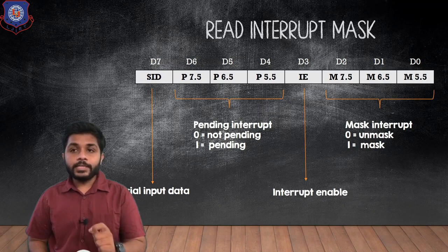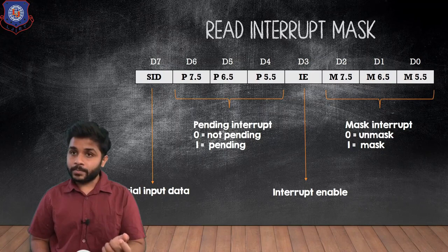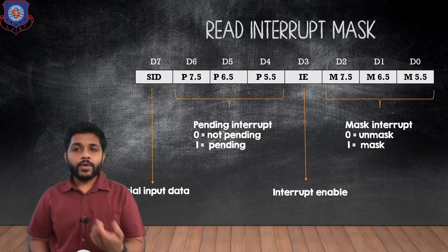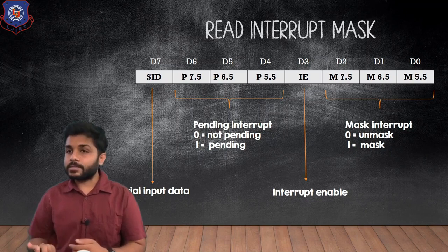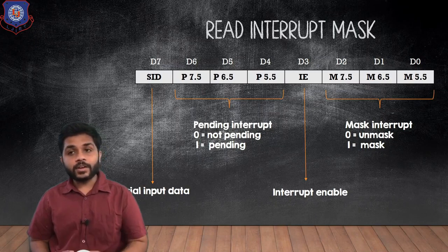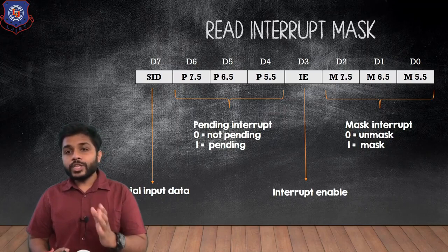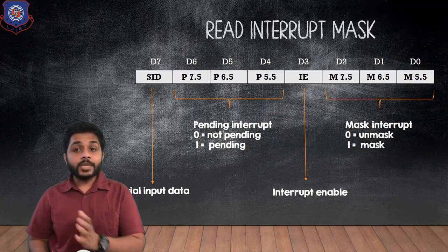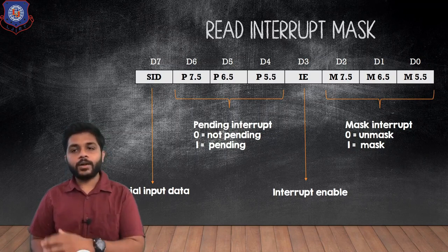Then D0, D1, and D2 — the values in these bits represent whether an interrupt is masked or unmasked. If the value of D0 is 0, it means that interrupt is unmasked. If the value of D2 is 1, it means that interrupt is masked. Using RIM, we can know which interrupts are pending and which are masked or unmasked.